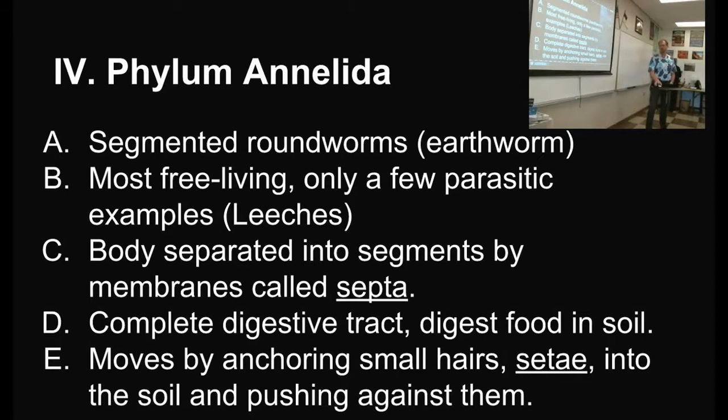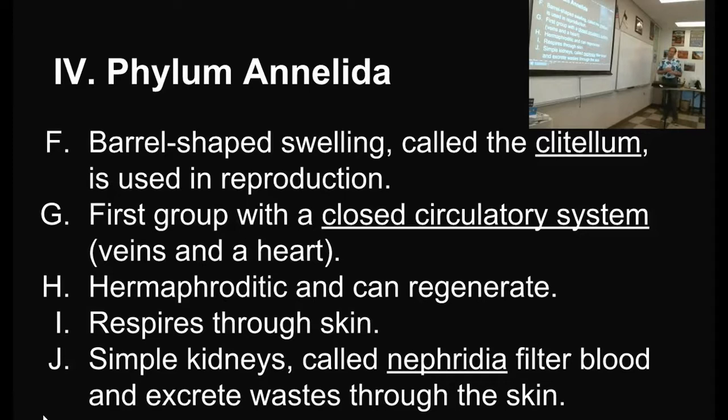They have a closed circulatory system, which is actually on the next slide. They have this barrel-shaped swollen region that you all saw in the dissections — called the clitellum. That makes what's called an egg case. They are all hermaphrodites and they mate with another worm rather than fertilizing themselves.